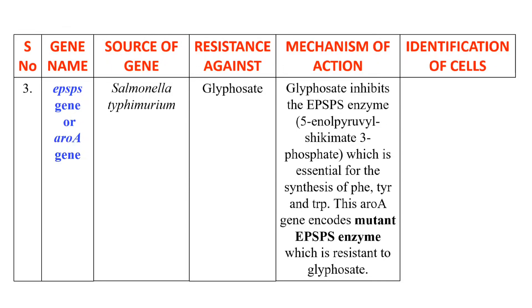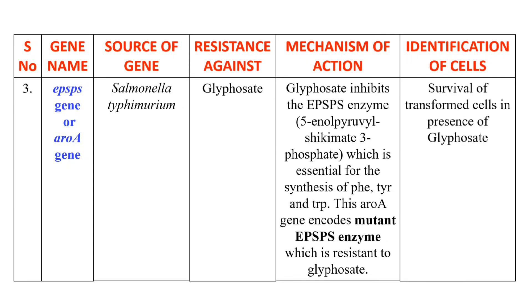This enzyme is a mutant — we are taking the gene for a mutant enzyme. Because it is mutant, it will not be inhibited by glyphosate; it is resistant to glyphosate.